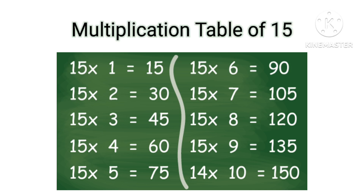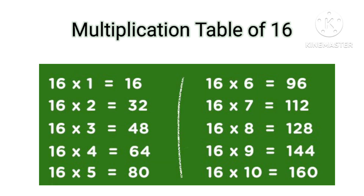Table of 15: 15×1=15, 15×2=30, 15×3=45, 15×4=60, 15×5=75, 15×6=90, 15×7=105, 15×8=120, 15×9=135, 15×10=150.